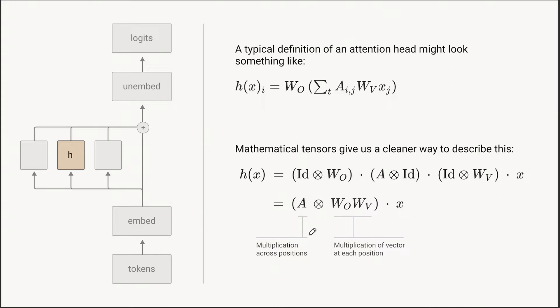An attention head fundamentally moves information from the residual stream of one token to the residual stream of another token. When it does that, it reads some subspace and writes that information to a different subspace in the residual stream of the second token. W_O W_V describes which subspace we read from and write to. A describes which token information moves from and to — A describes the token that gets read from and written to, while W_O W_V describes the subspace of the token that we're reading from and where it gets written.